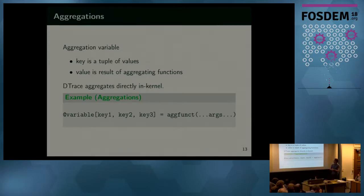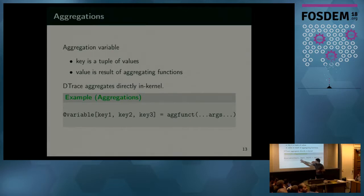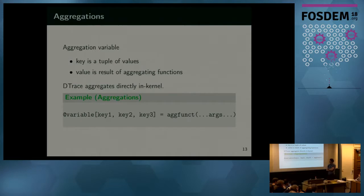One of the most powerful things in D-trace are aggregations, which happen directly in the kernel. They are presented in the D language as a special variable that can use multiple keys. A key can be anything — a stack, a string, a number, basically whatever we can hash. There is a limited set of aggregating functions, from simple counting to something more complex. We maintain a hash table in the kernel and apply the aggregating function per CPU, then merge aggregations together. It's quite effective for counting because it happens straight without post-processing — you don't have to send a huge stream of data up for further processing.